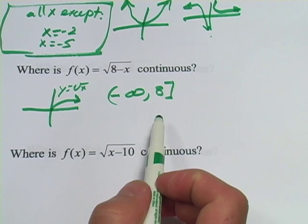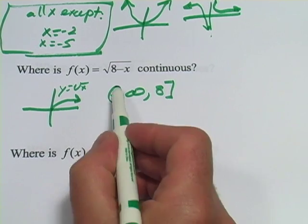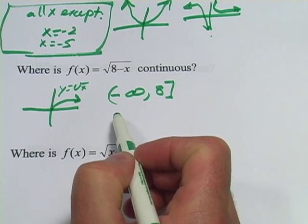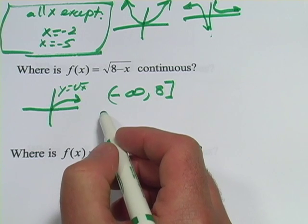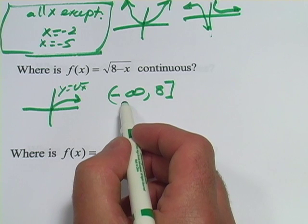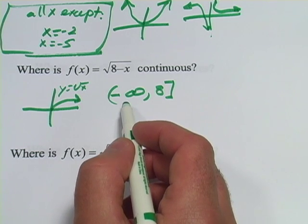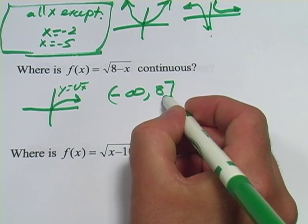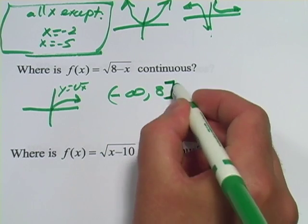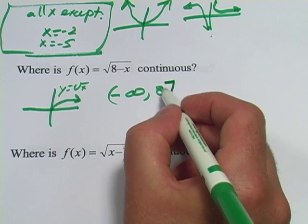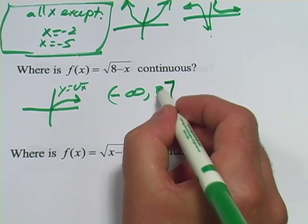And I've used this interval notation. In case you need a refresher about that, the curved parentheses means that value isn't included. And that's always the case with negative infinity and positive infinity, because we can't really say there's an actual value for that. And then the right angled bracket here says you include that value, so this includes eight.